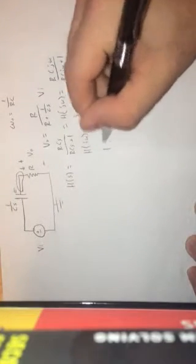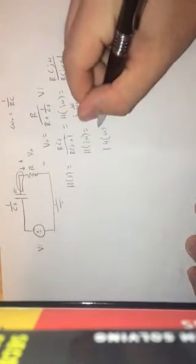Now the problem is asking us to find the magnitude response. So in order to find the magnitude response, we just basically take the absolute value. Get rid of the J there because it goes away. We're going to take the magnitude of it.